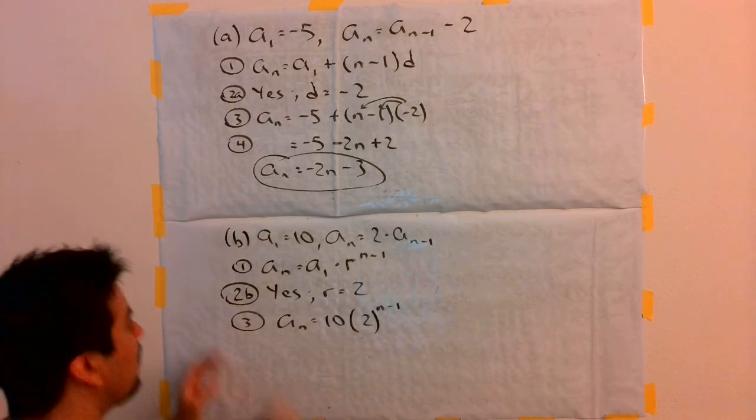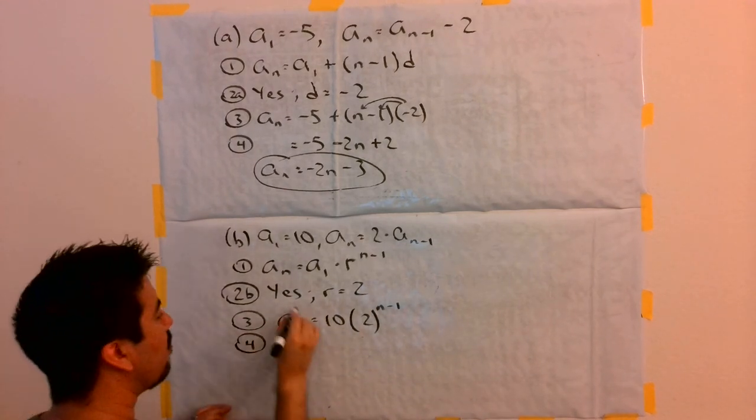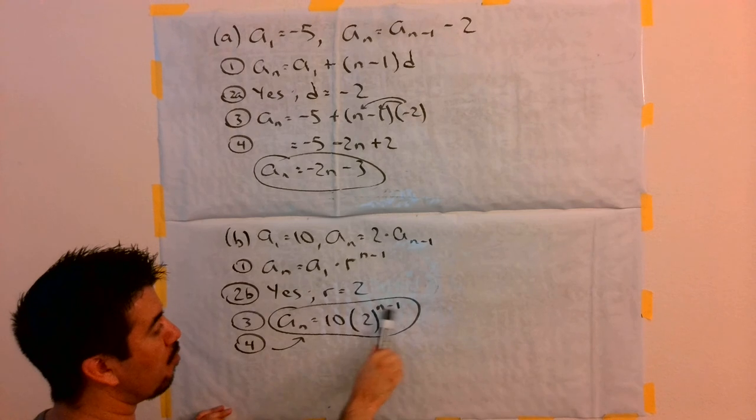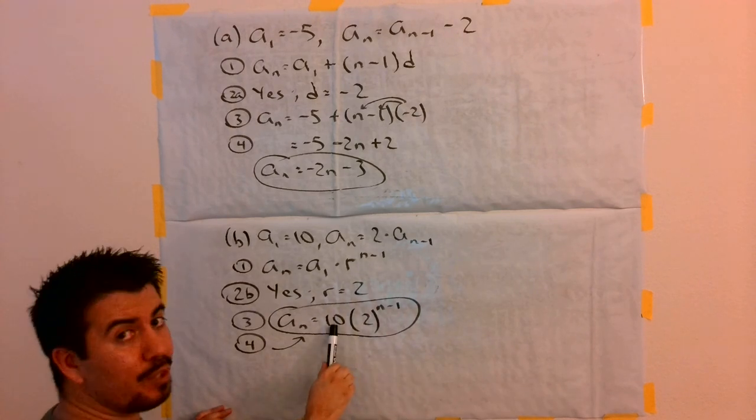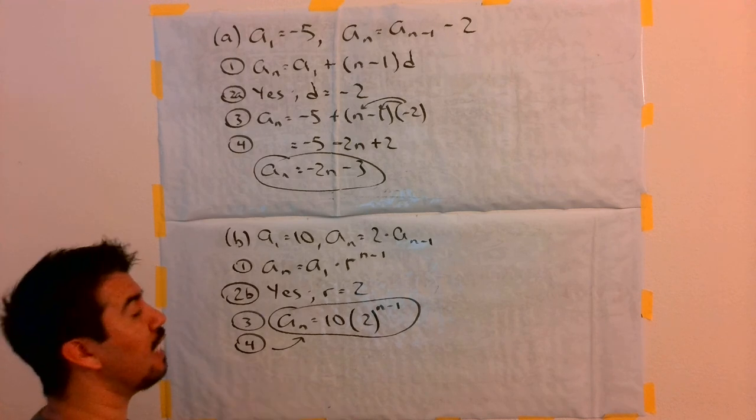And step 4 says to simplify. Well, there's actually nothing I can do to simplify this. Here's why. I cannot multiply 10 times 2 and get 20. The reason being because 2 is being raised to a certain power. The 10 is not being raised to that same power.